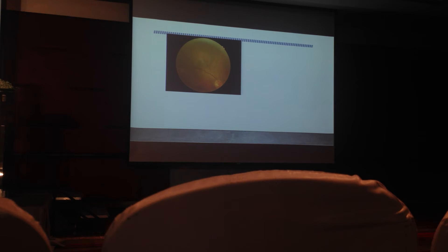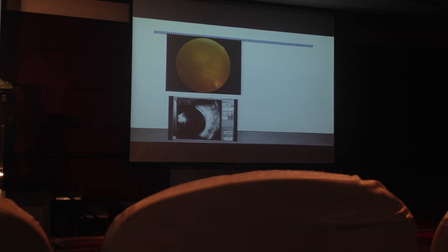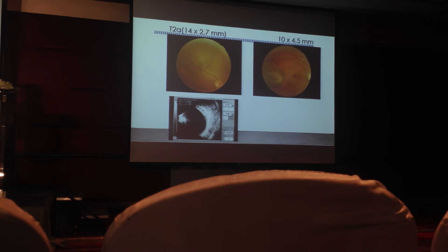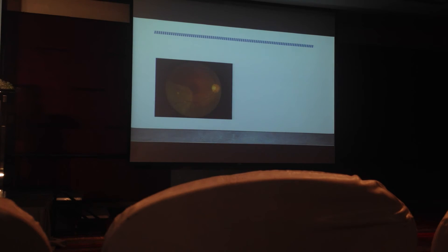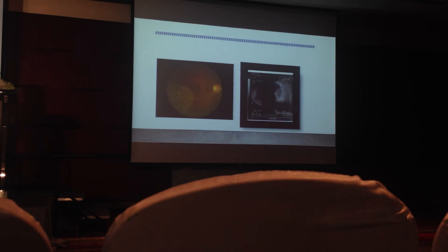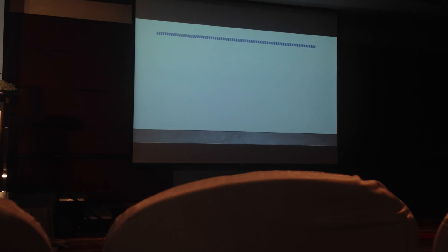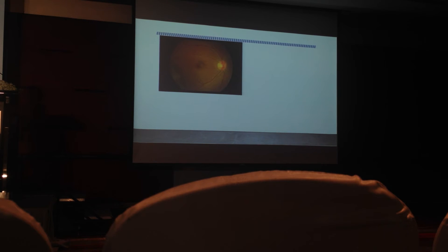This is a diffuse type of uveal melanoma — on ultrasound it measures about 14 mm. Another case shows a posteriorly located tumor about 5 to 6 mm in thickness and about 10 mm in basal diameter, classified as T2A. This is the most commonly seen uveal melanoma in Asians — posteriorly located, measuring about 6 by 12 mm, also a T2A tumor. This is another anteriorly located tumor.